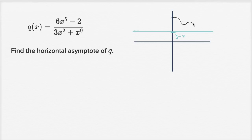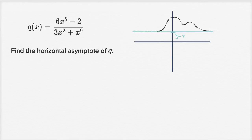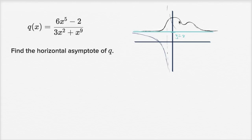The graph might do some things in the middle, but as x gets really large, it approaches y equals 2 without ever quite getting there — and similarly as x becomes more and more negative. Or if there's also a vertical asymptote, the function might approach the horizontal asymptote from below on one side and from above on the other side. That's the sense of what a horizontal asymptote is: what value is the function approaching as x becomes really positive or really negative?